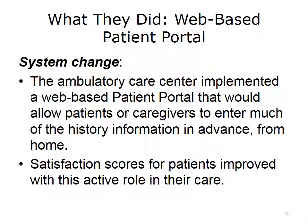In response to this event, the Ambulatory Care Center implemented a web-based patient portal that would allow patients or caregivers to enter much of the history information in advance from home. Patient satisfaction scores improved with this active role in their care. Effective patient-provider communication, where the patient and family perceive themselves as participants in the patient's care, is essential for quality health care. Collecting an accurate and current home medication list at each patient encounter is a national patient safety goal. HIT can help to engage the patient and family in the patient's care to ensure that this goal is met.